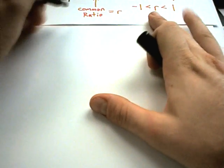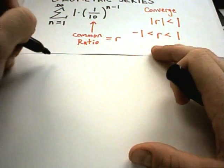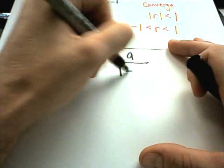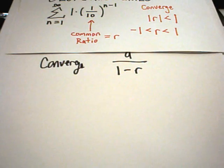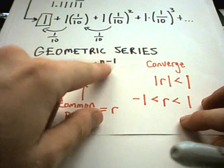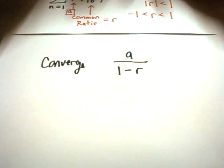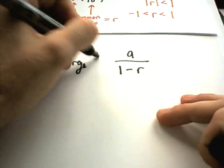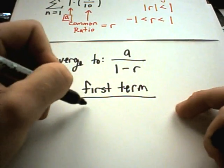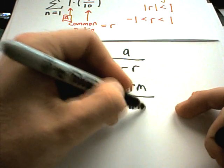For a geometric series — again, one of the few types where you can determine convergence or divergence — if you know you have a convergent geometric series, it converges to a over one minus r, where a is the first term. This formula is sometimes written as the first term of your series divided by one minus the common ratio. Note this formula works when your geometric series starts at n minus one, which can be a little confusing.